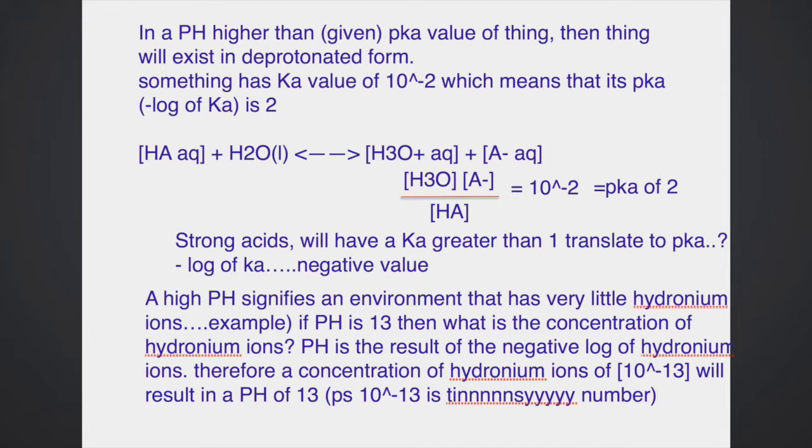Now, if we introduce, let's say, this acid, which by the way has an equilibrium of 10 to the negative 2, it likes to dissociate fairly well. If we introduce it to an environment of a pH of 13, meaning the hydronium ions are really really low, therefore the reaction according to Le Chatelier's principle will try to make more hydronium ions.